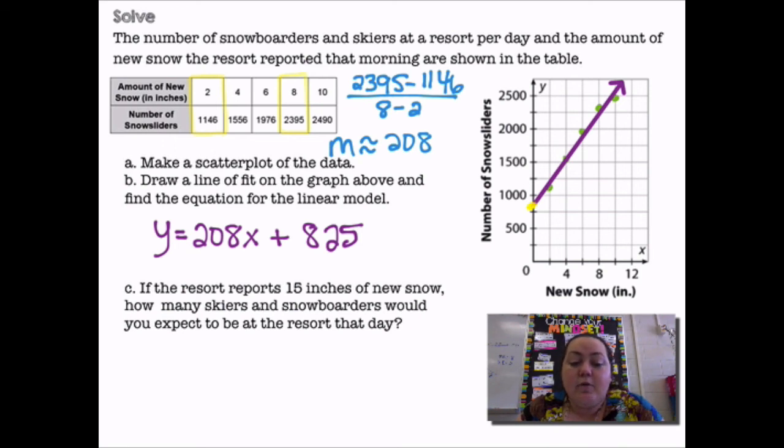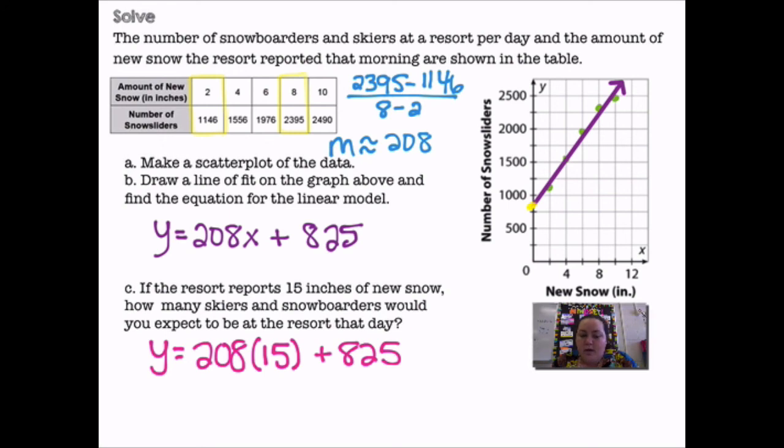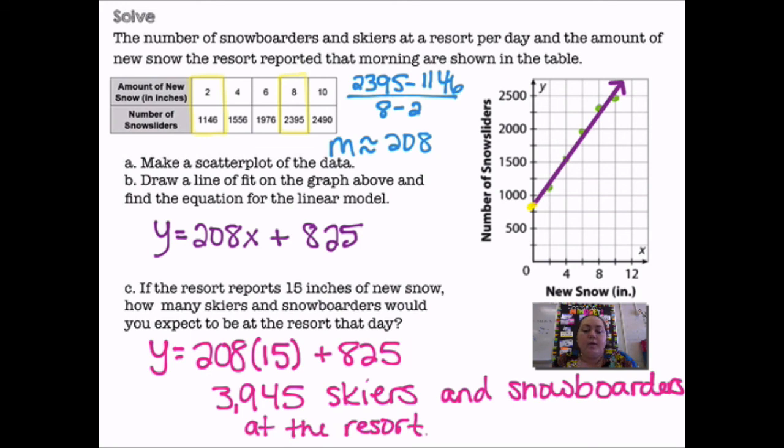Question C says, if the resort reports 15 inches of new snow, how many skiers and snowboarders would you expect at the resort that day? So x represents the number of inches of snow. So I'm going to plug 15 in for x into my equation. So it's going to be 208 times 15 plus 825. When I multiply 208 times 15 and add 825, I get 3,945. So I would expect there to be 3,945 skiers and snowboarders at the resort.